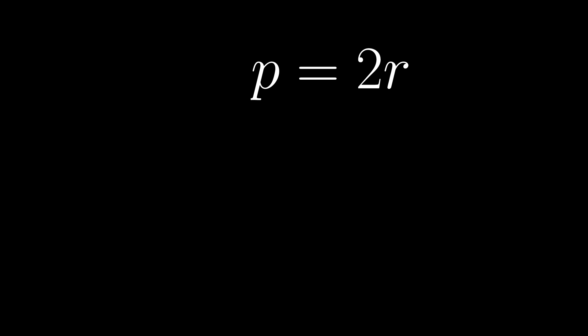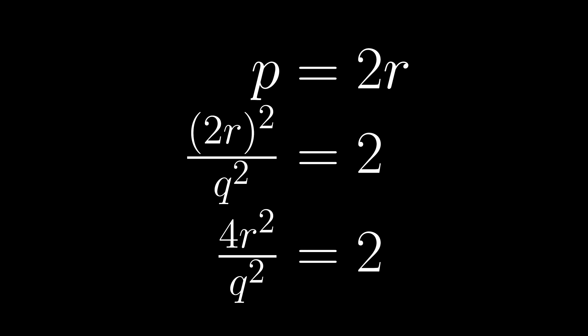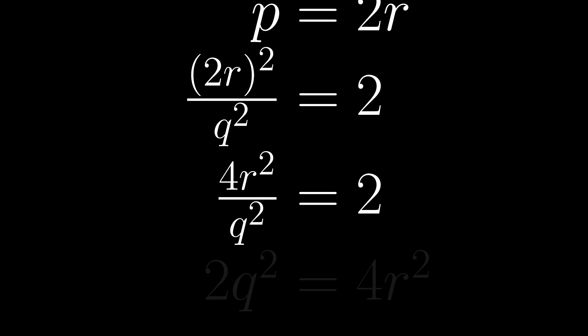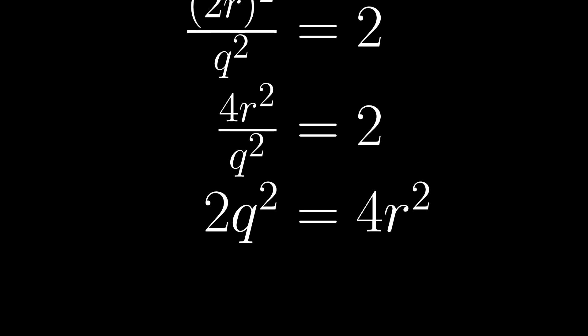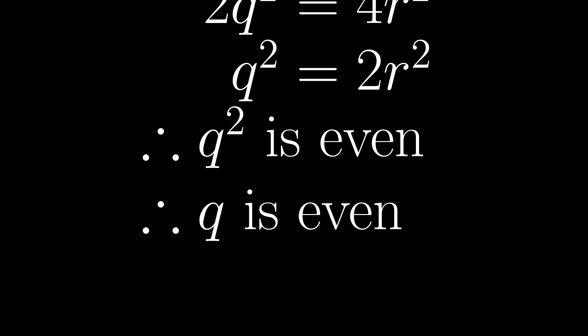So we can set P equal to 2R, where R is an integer. Substituting, we see that 2 is 4R squared over Q squared. So 2Q squared equals 4R squared, so Q squared equals 2R squared, so Q squared is even, so Q is even. So Q equals 2S, where S is an integer.